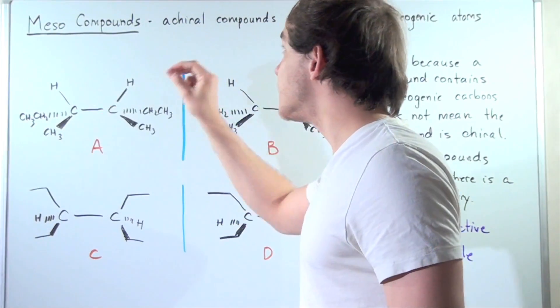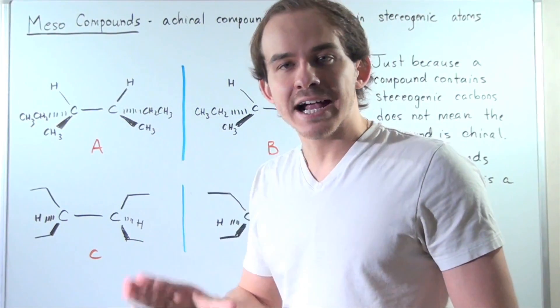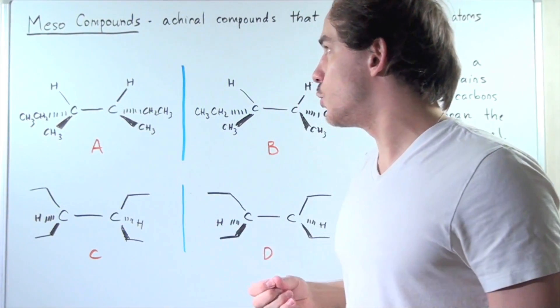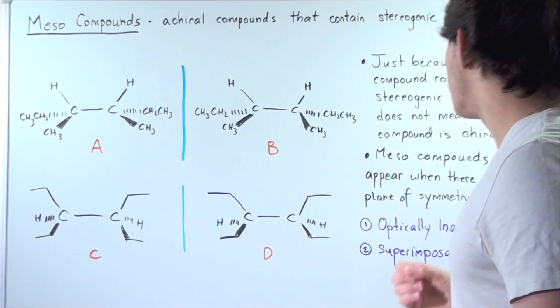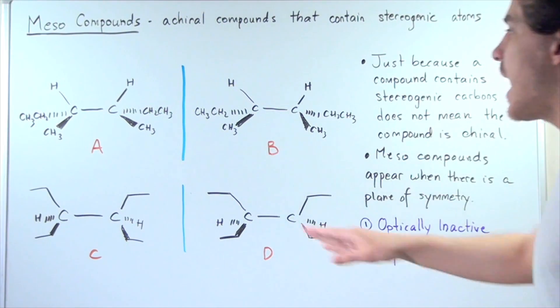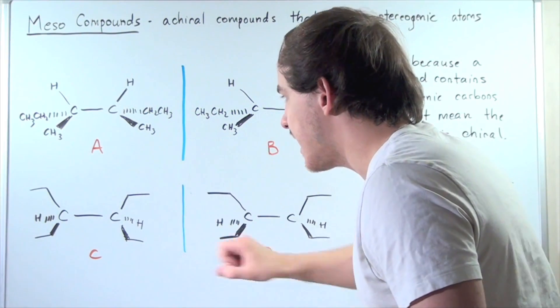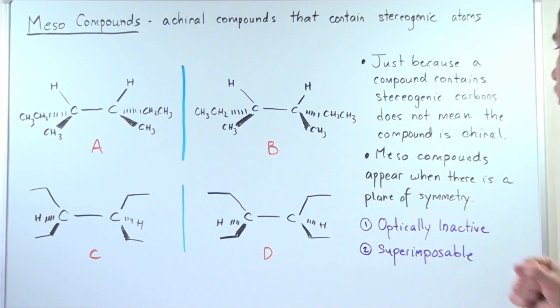So even though they have stereogenic carbons, both A and C are achiral. So we call these molecules mesocompounds. Just because a compound contains stereogenic carbons, as we saw in compound A and C, this does not mean that the compound is chiral. In fact, for both of these cases, they were achiral.